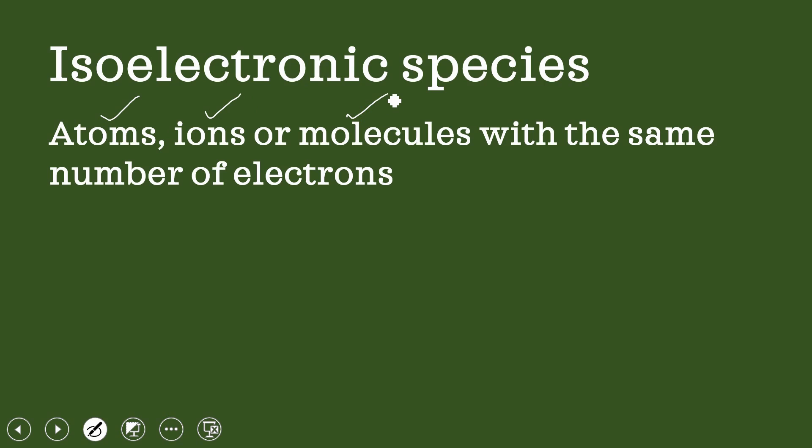The only condition is they should have the same number of electrons. One example: sodium ion atomic number 11, magnesium ion with atomic number 12, neon with atomic number 10. Here, atomic number is 11, sodium is having one positive charge, so number of electrons will be 11 minus 1, that is equal to 10.